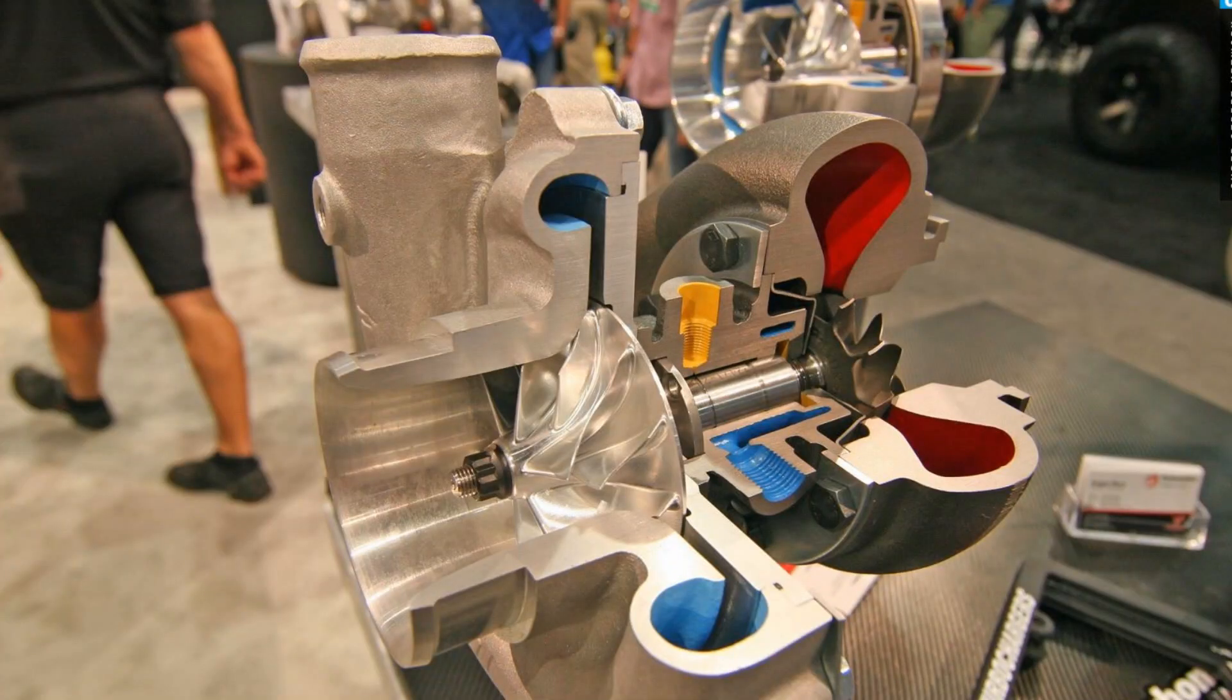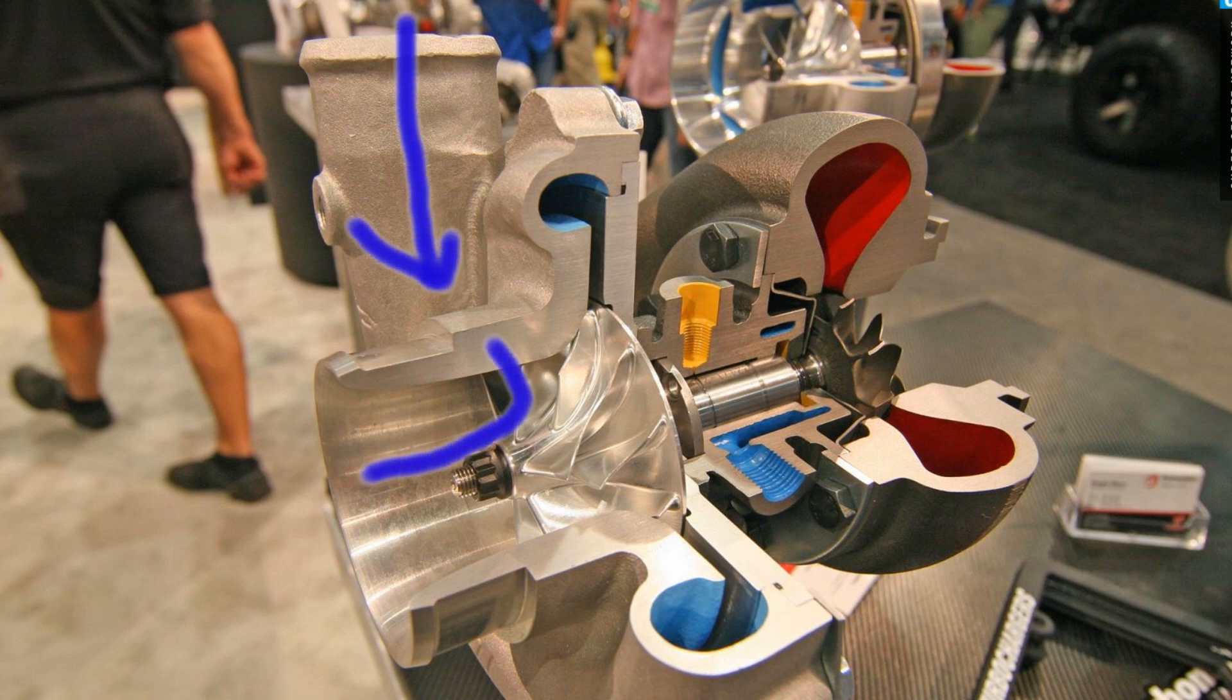Once the blades are stalled, they are no longer pressurizing the outlet of the turbo, so the high-pressure air wants to flow back through them. This backflow equalizes the pressure difference, allowing the flow to reattach on the blades and once again pressurize the outlet of the turbo, repeating the process.